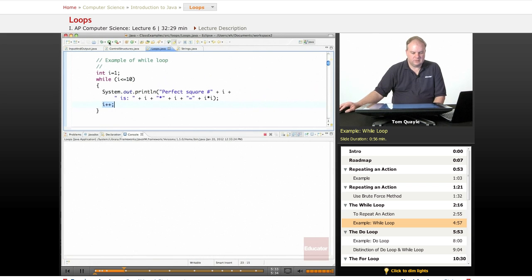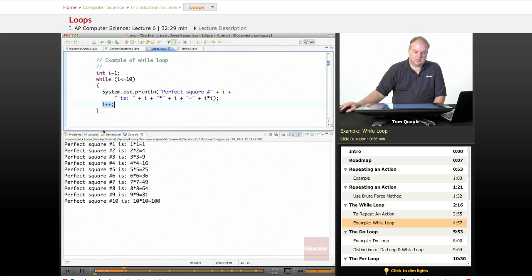Alright, and I did get the expected 10 results. Perfect square number 1 through perfect square number 10. So that worked exactly as I wanted it to.